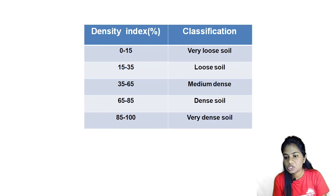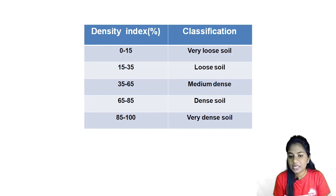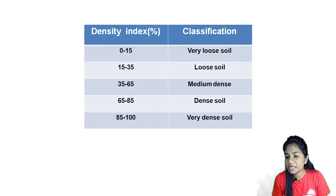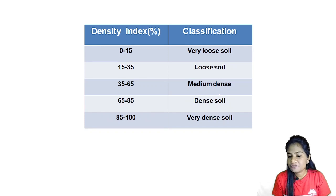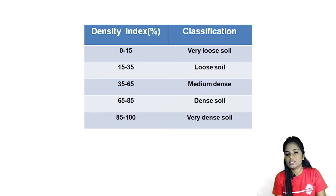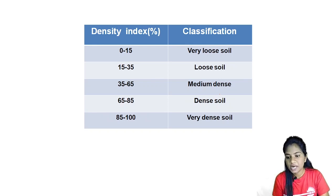Classification by density index: 0–15% is very loose soil, 15–35% is loose soil, 35–65% is medium dense soil, 65–85% is dense soil, and 85–100% is very dense soil.